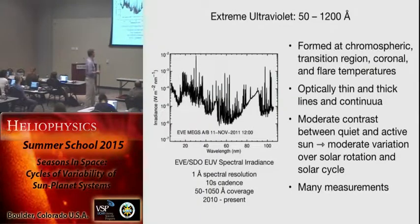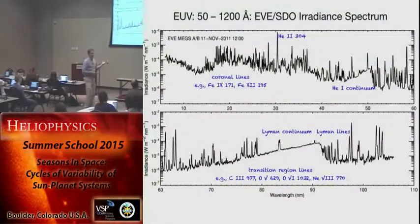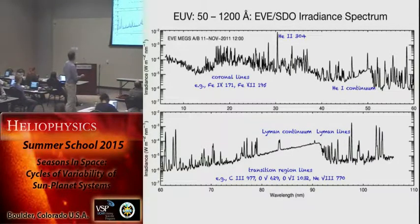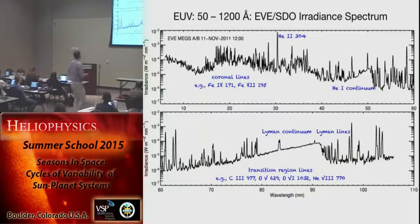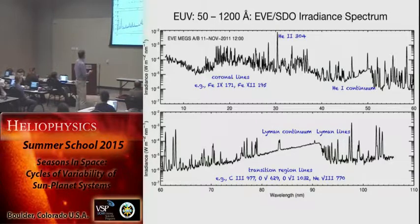Here's a full EVE spectrum at one angstrom spectral resolution. You can see many, many emission lines, as well as continuum processes like the Lyman continuum and the helium-1 continuum. The observed spectra are combinations of optically thin lines — like carbon 3 — and optically thick lines that depend on radiative transfer, like helium-2 304.